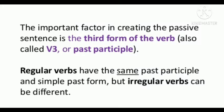The important factor in creating a passive sentence is the third form of the verb, also called the verb's third form or past participle. Regular verbs have the same past participle and simple past form, but irregular verbs can be different. We have already studied regular and irregular verbs. If you want to revise them, you can go to the video in which I have described the verbs. For converting active voice into passive voice, we need to know the verb's third form — you have to learn them by rote.